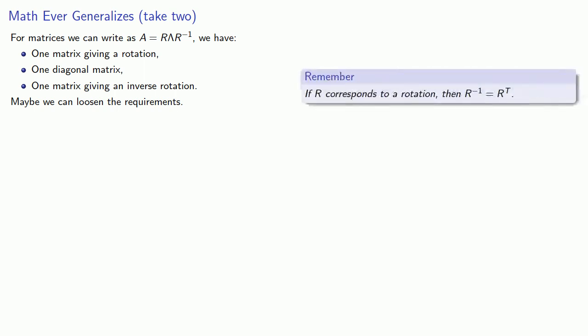If R corresponds to a rotation, then R^(-1) corresponds to the transpose of R. So if we try to generalize this, R^(-1) will be the transpose of a matrix corresponding to a rotation.